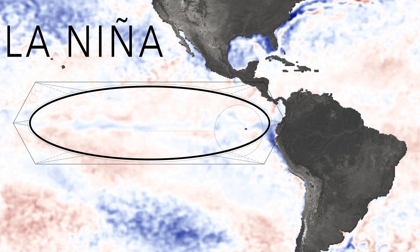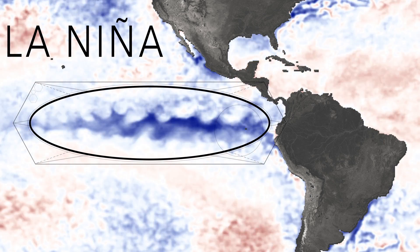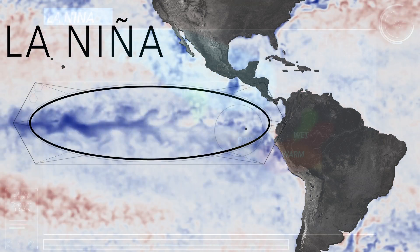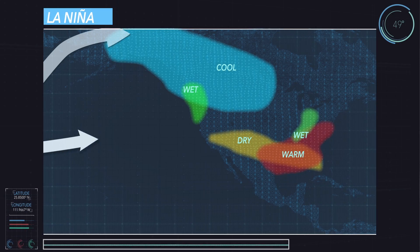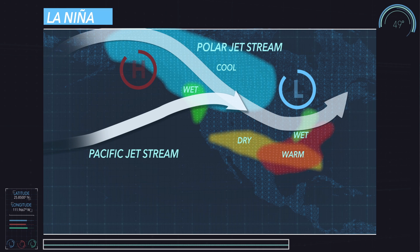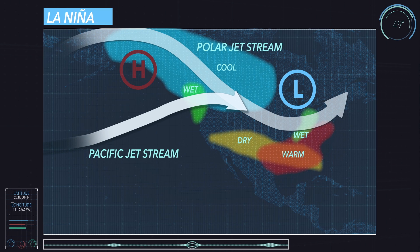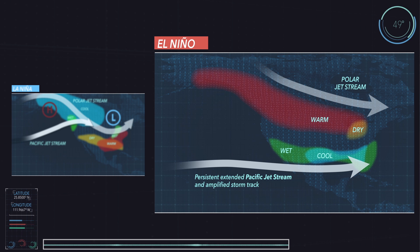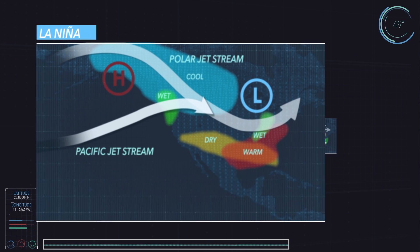Now La Niña, the cooling of the Pacific waters, can also affect the weather patterns around the world. As we look at this, we see those jet streams pretty far north. Remember with El Niño, on the average you get this jet stream across the Pacific, southern section of the United States. But with La Niña, they all move to the north.